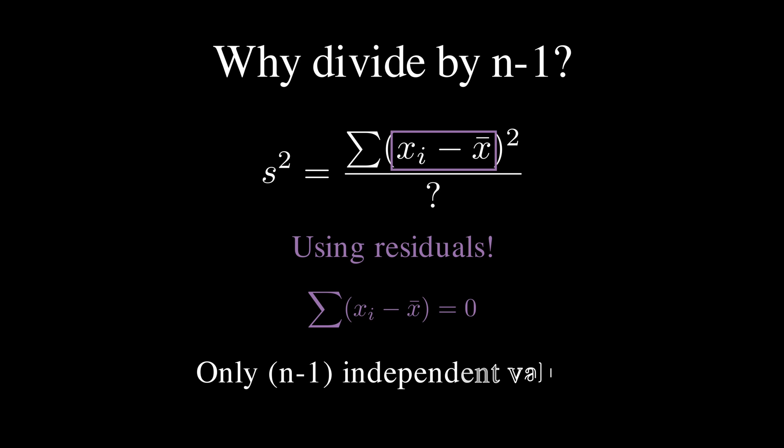These residuals only have n minus one degrees of freedom. They're not completely free to vary, because they must sum to zero. If we divide it by n, we'd be underestimating the true variance because we'd be acting like we have n independent pieces of information, when really, we only have n minus one.